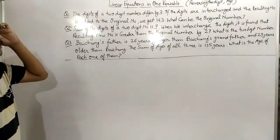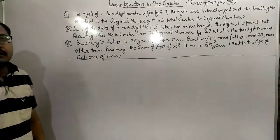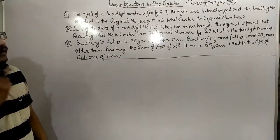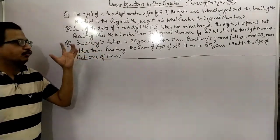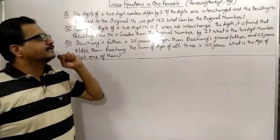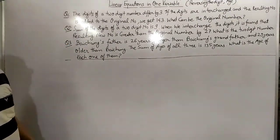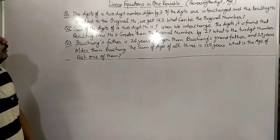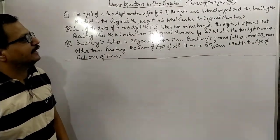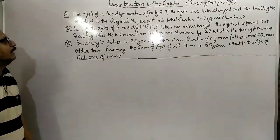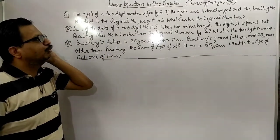Good morning everyone. Today I am going to discuss some questions on linear equations in one variable. There will be two types of questions: one based on digit reversal, and the other based on age. The first question is: the digits of a two-digit number differ by three. If the digits are interchanged and the resulting number is added to the original number, we get 143. What can be the original number?